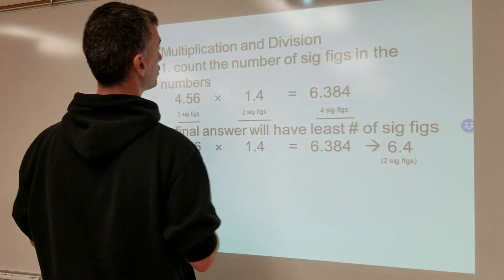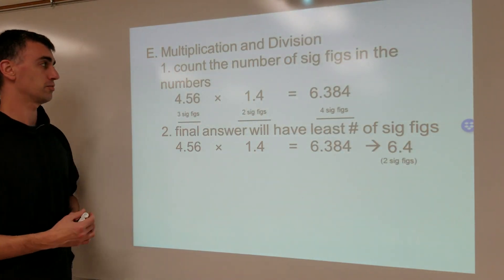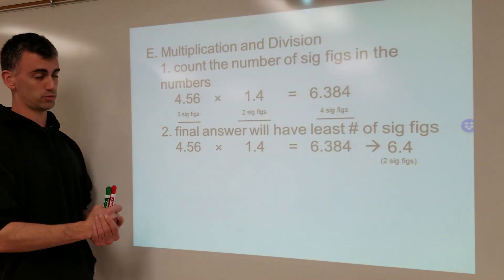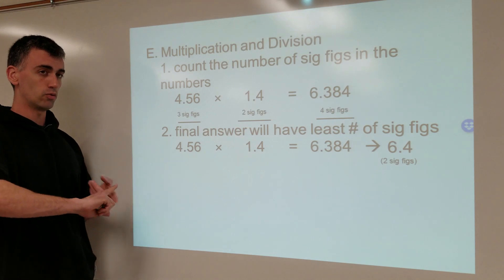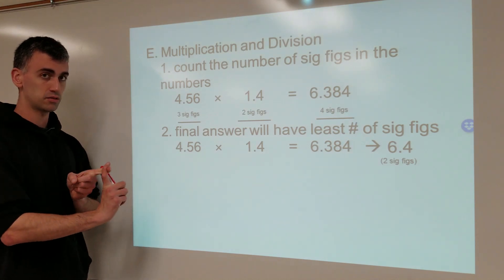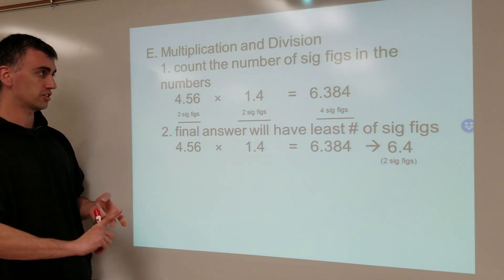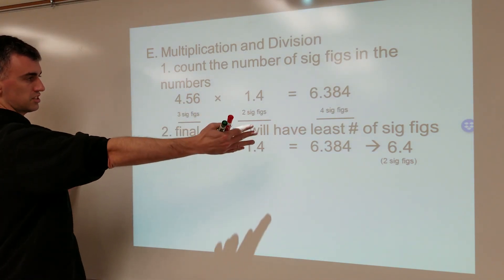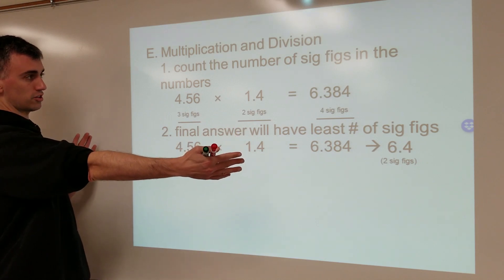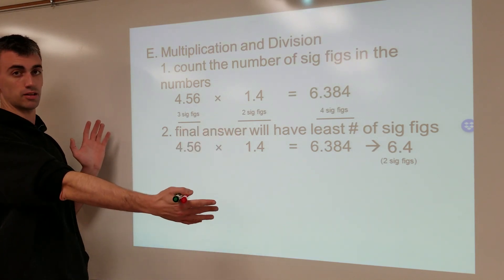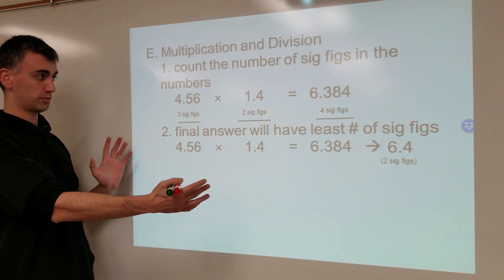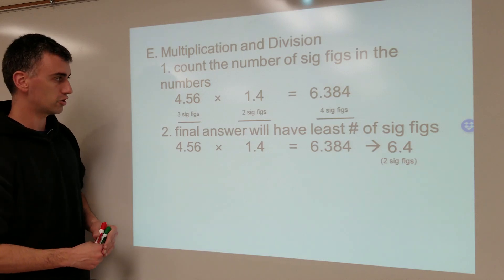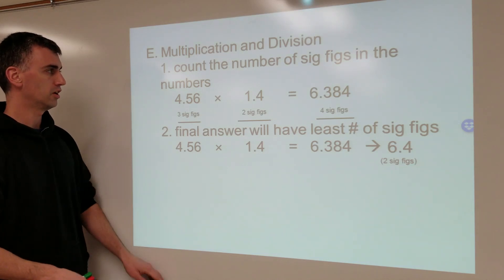Alright, multiplication and division. When you want to round off a number correctly, one rule applies to addition and subtraction, and a different rule applies to multiplication and division. What you're seeing here is essentially the entire thing in a nutshell for multiplication and division. This should be fairly short to go over.